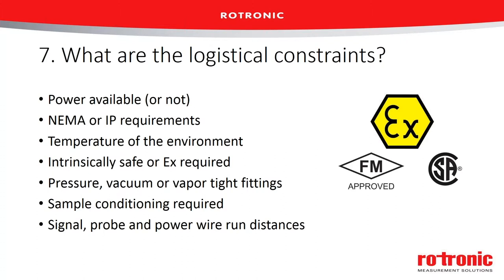For pressurized or vacuum-based systems, the sensor may need to go through a fitting — it's important that the sensor seals off well, both on the outside edges and down the length of the probe, so pressure isn't lost or air isn't allowed in. Sample conditioning may also require additional hardware. For signal and probe power over long distances, if you have an analog output and know you need to run the signal a long distance, avoid a 0–10 volt output — the wire resistance will affect readings. It's better to choose an instrument with a 4–20 milliamp output.